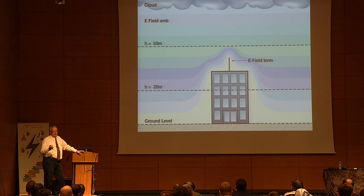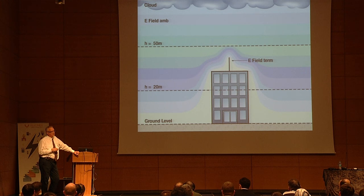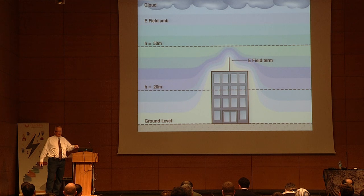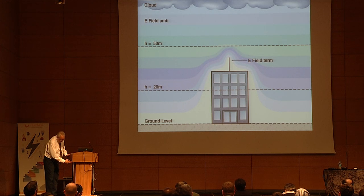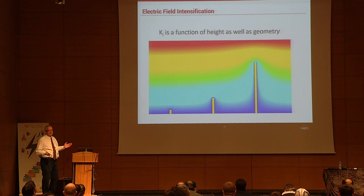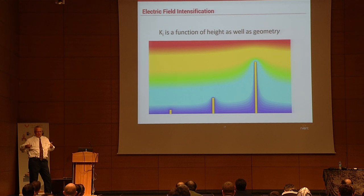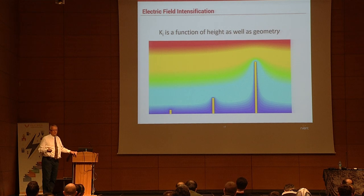With high-speed cameras and more sophisticated equipment, people are monitoring these things and getting real data. There's a different statistical probability depending on whether you have a sharp point on a building or something else. The probability of a strike varies — higher points have a much higher statistical probability to be struck. There's also a difference between a slender structure like a communication tower versus a large building with different elevations, because the distribution of the field is different.